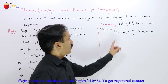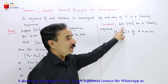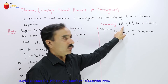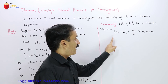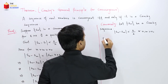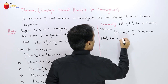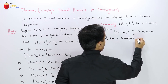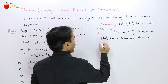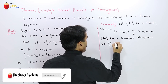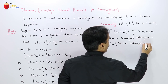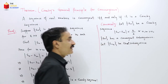Since Sn is a Cauchy sequence, using the theorem from the last lecture — that every Cauchy sequence has a convergent subsequence — Sn has a convergent subsequence. Let Sn_k be that convergent subsequence.